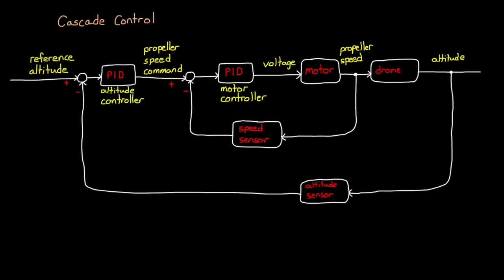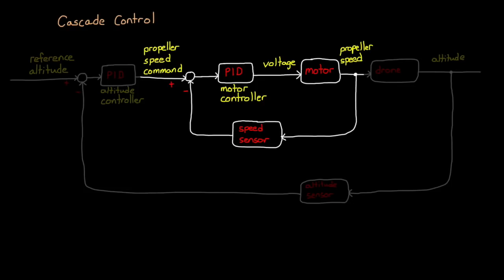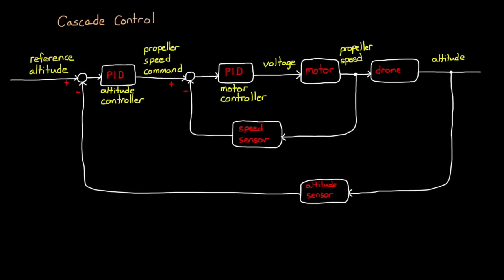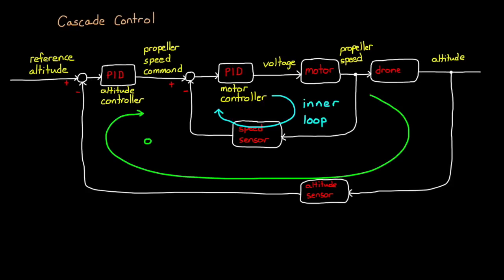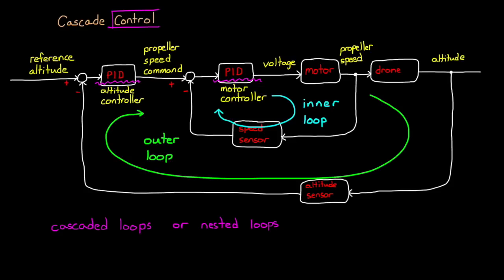So now we have two feedback loops in our system: one that controls the motor speed, and one that controls the drone altitude. We can call these the inner and outer loops to distinguish between the two. These are cascaded loops, or nested loops. The outer loop drives the set point of the inner loop, and the inner loop affects the feedback path of the outer loop, so they're intimately connected. You would probably expect that a system with two PID controllers interacting with each other would require a different approach to controlling it versus a system with just a single loop — and you would be right, but it may not be as different as you expect.